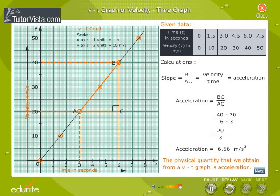That is, the physical quantity that we obtain from a v-t graph is acceleration.